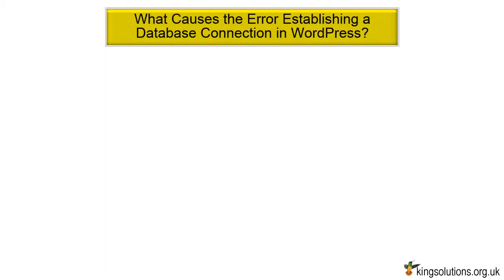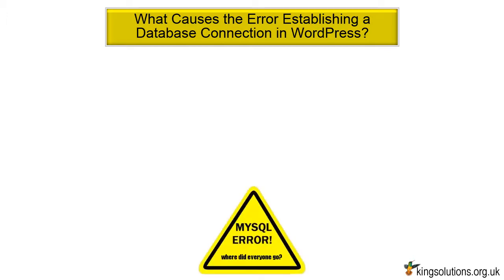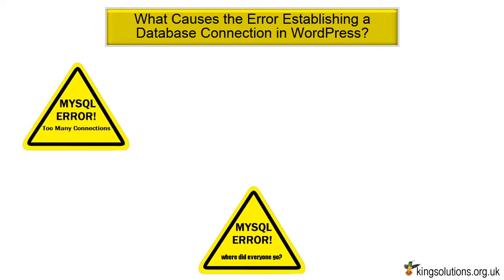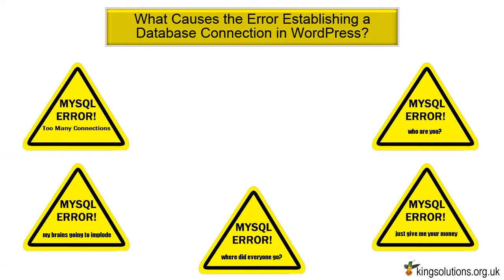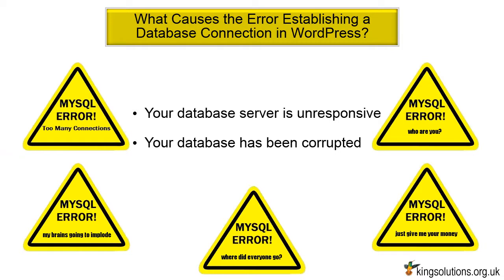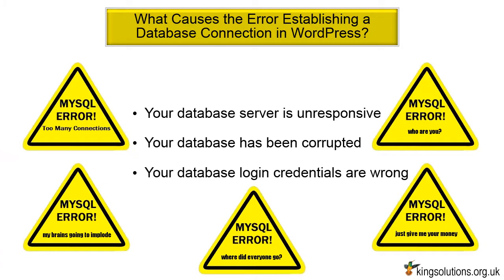What causes error establishing a database connection in WordPress? Well, and this may be a little obvious, you are getting this error because WordPress is unable to establish a database connection. This means that for some reason, the PHP code was unable to connect with your MySQL database to retrieve the information it needed to build your website pages. The reasons are many: your database server may be down due to a problem with your web hosting company, or you could be experiencing a big traffic spike. Your database may have been corrupted — most likely by a bad plugin. Or your database login credentials may be wrong. In all probability though, the error is caused by a server error.